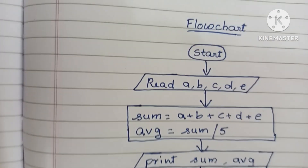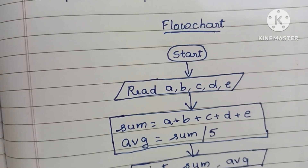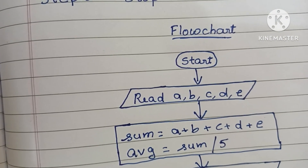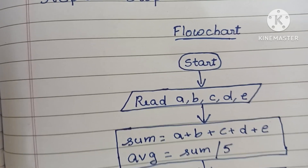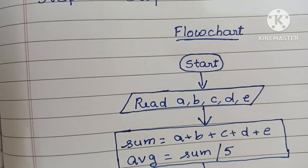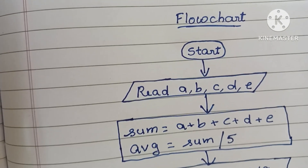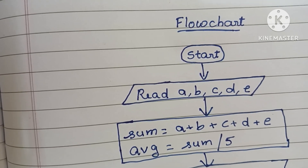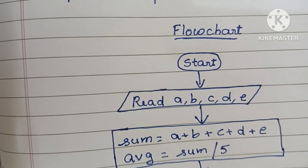So guys, this is the algorithm and flowchart to find sum and average of five numbers. Thank you for watching. If you like my video, please like and subscribe to my channel. All the very best.